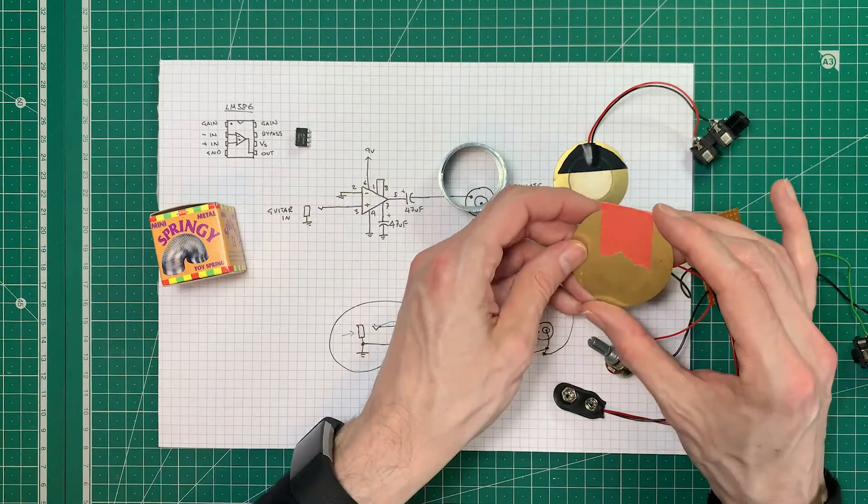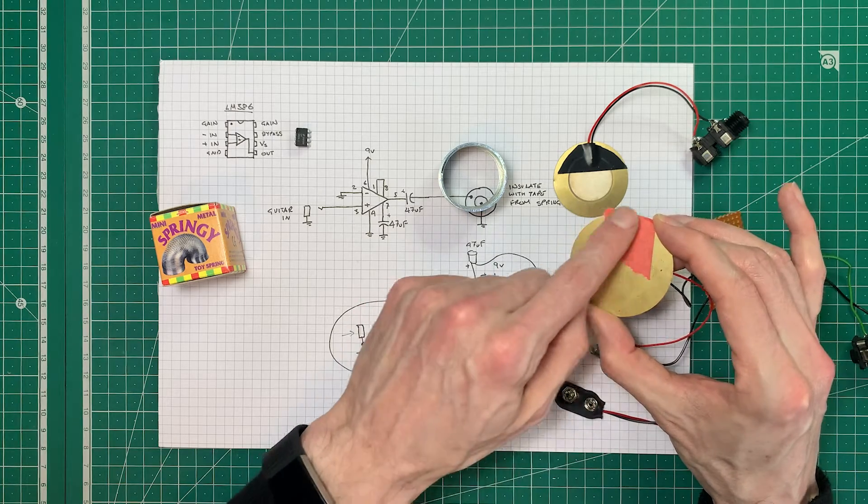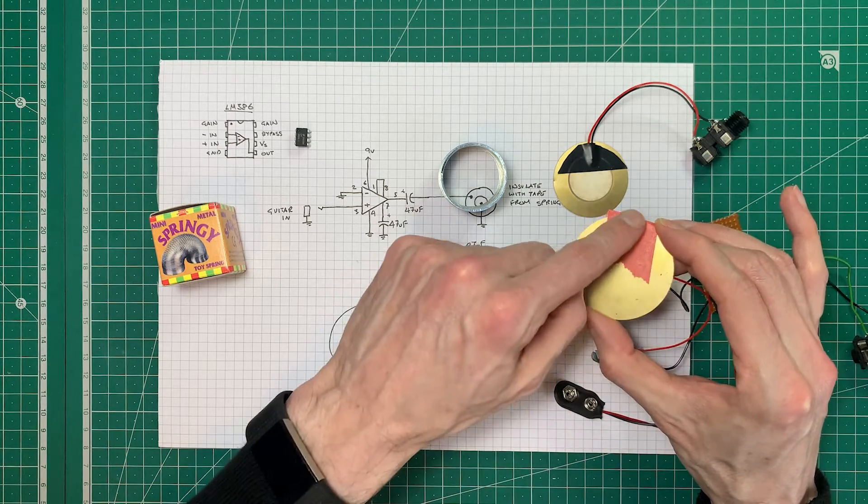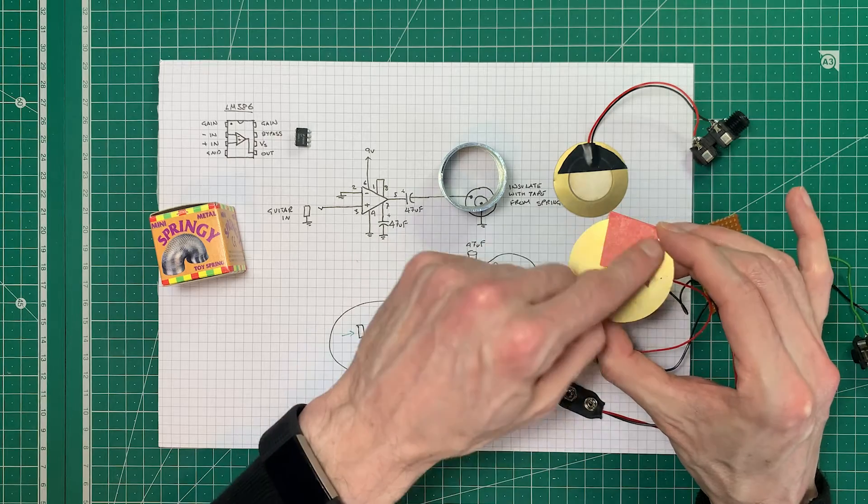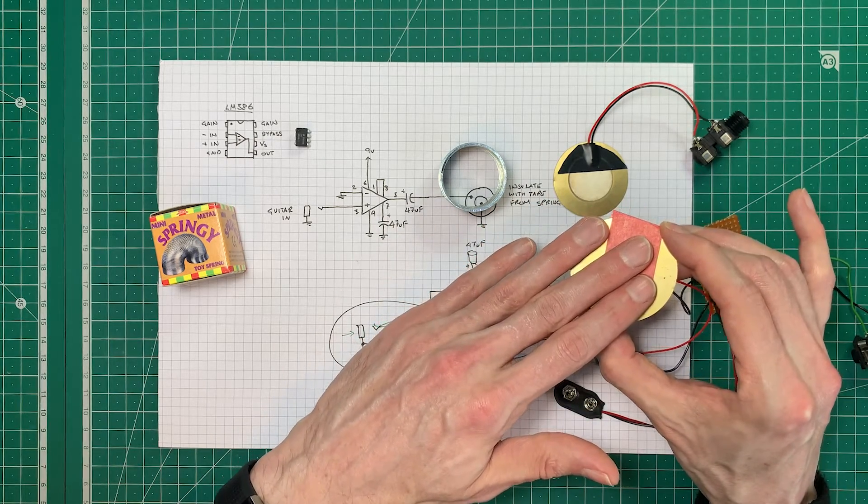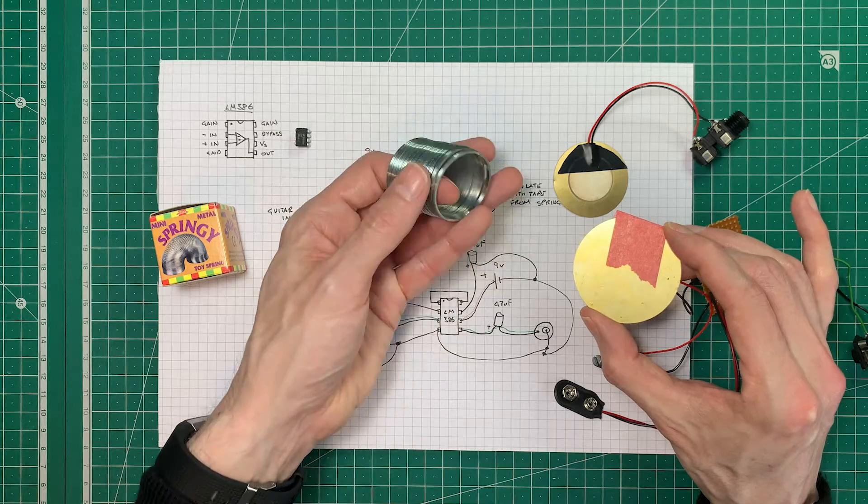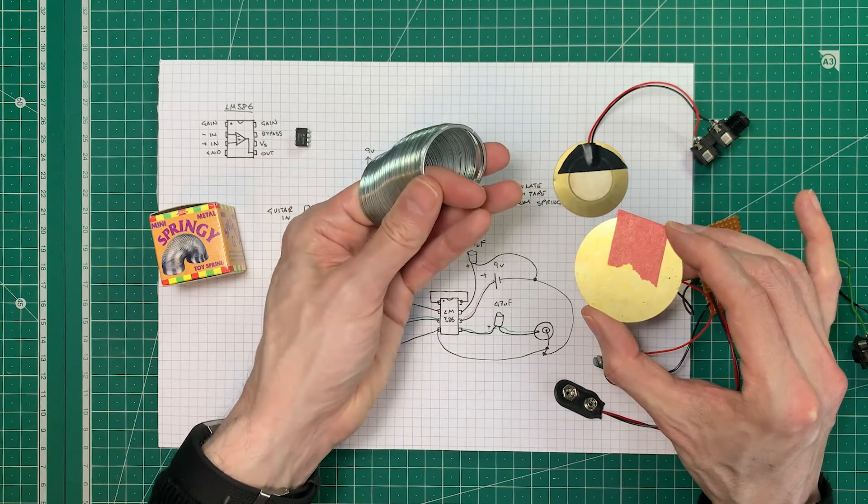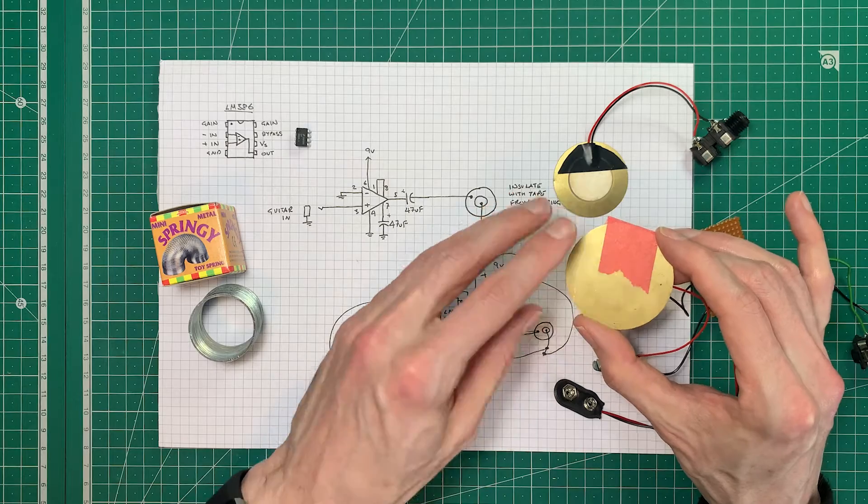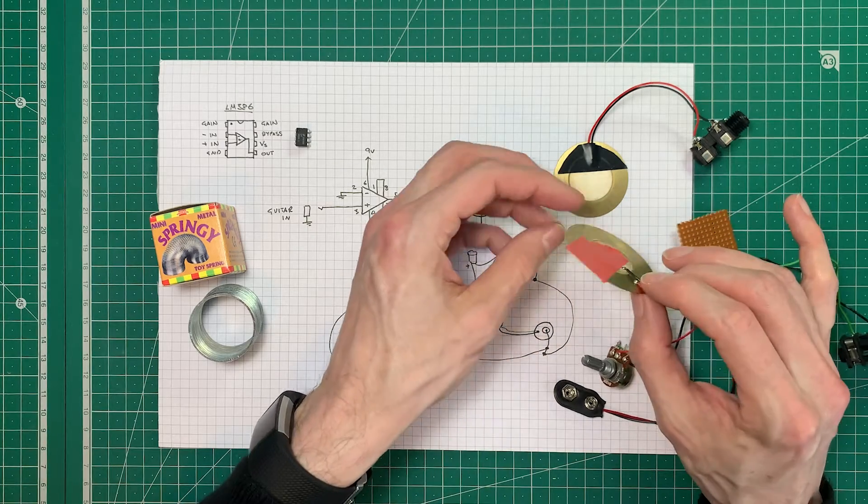So what you want to do is insulate the piezo using a bit of tape like I've done here but you want to really tape up all of this surface. Now remember as you tape up this surface you're also dampening it so it's going to affect the level that comes through the spring as well. So it's a balance and takes a little bit of experimentation basically.